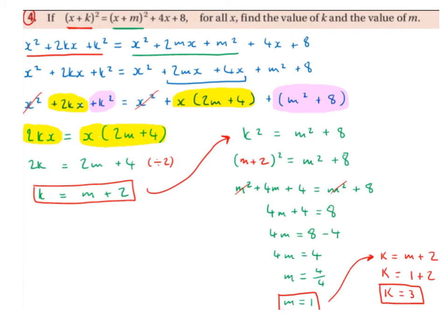So we were asked to find the values of k and m. k is equal to 3 and m is equal to 1.